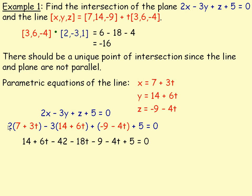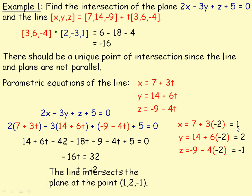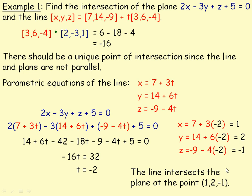Expanding and distributing, then collecting like terms: 6t minus 18t minus 4t gives negative 16t. Combining constants and bringing them to the right side gives 32. Dividing by negative 16, we get t equals negative 2. Substituting negative 2 back into the parametric equations: 7 minus 6 is 1, 14 minus 12 is 2, and negative 9 plus 8 is negative 1. So the line intersects the plane at the point (1, 2, -1).